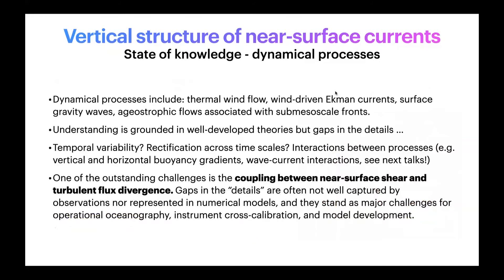In terms of the state of knowledge, the dynamical processes involved in creating shear in surface currents include thermal wind shear, wind-driven Ekman currents, surface gravity waves, and ageostrophic flows associated with mesoscale forms. The understanding of these processes is grounded in relatively well-developed theories, but there are some gaps in the details — for example, the various temporal variability of all these processes, the rectification of processes across different timescales, the interaction between buoyancy-driven processes and wind-driven Ekman currents, as well as wave-current interactions. The coupling between near-surface shear and turbulent flux divergence remains an outstanding challenge, and these gaps are often not well captured by observations or represented by numerical models.